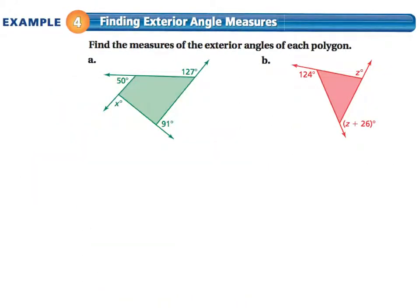Example 4: finding the exterior angle measures. In part A, we know we have four angle measures. I could add them all up. 50 plus 127 plus 91. That gives me x plus 268. We know they all have to add up to 360. So that means x is going to be 92.